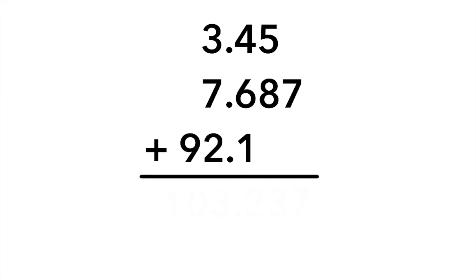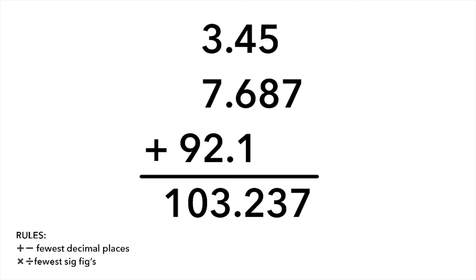3.45 plus 7.687 plus 92.1. The unrounded answer is 103.237. Since we're adding, we also have to look and see which number from our calculation has the fewest number of decimal places. 92.1 only has one decimal place, so it is the least precise.